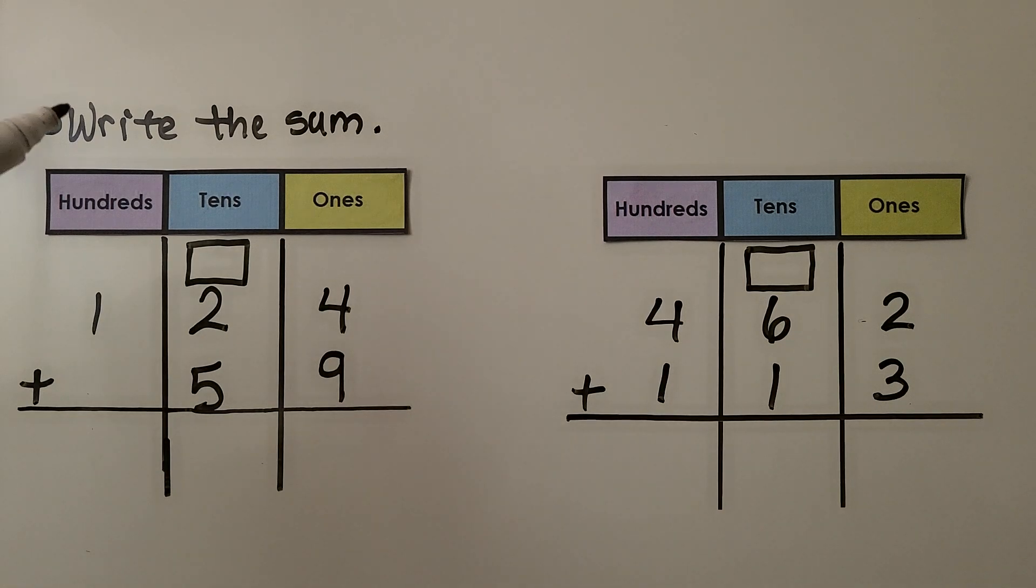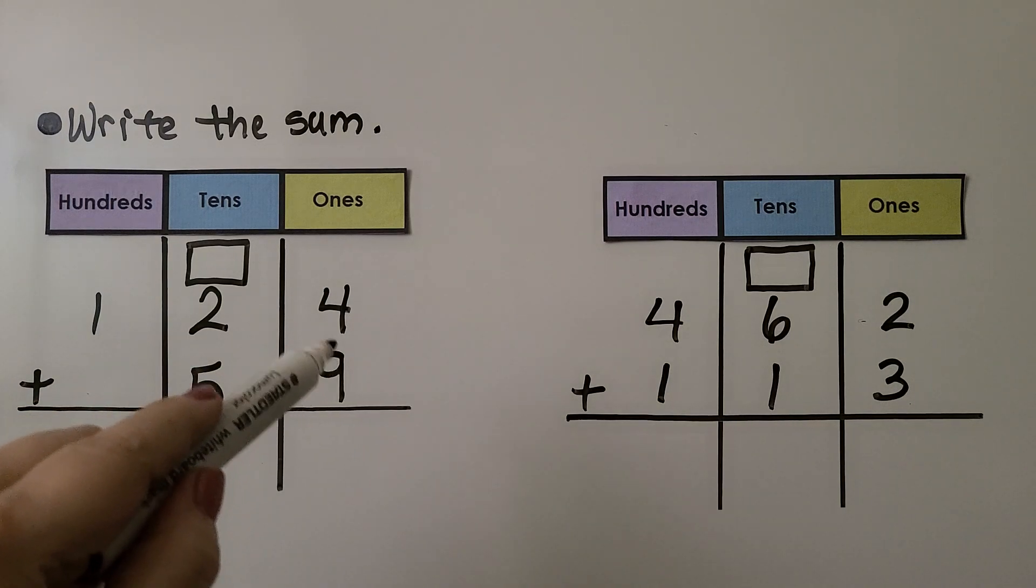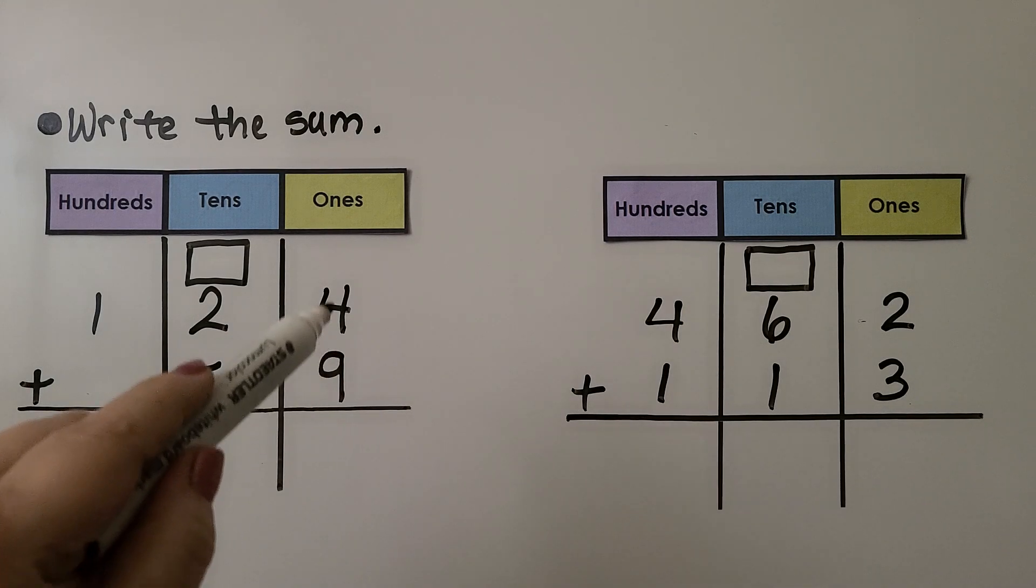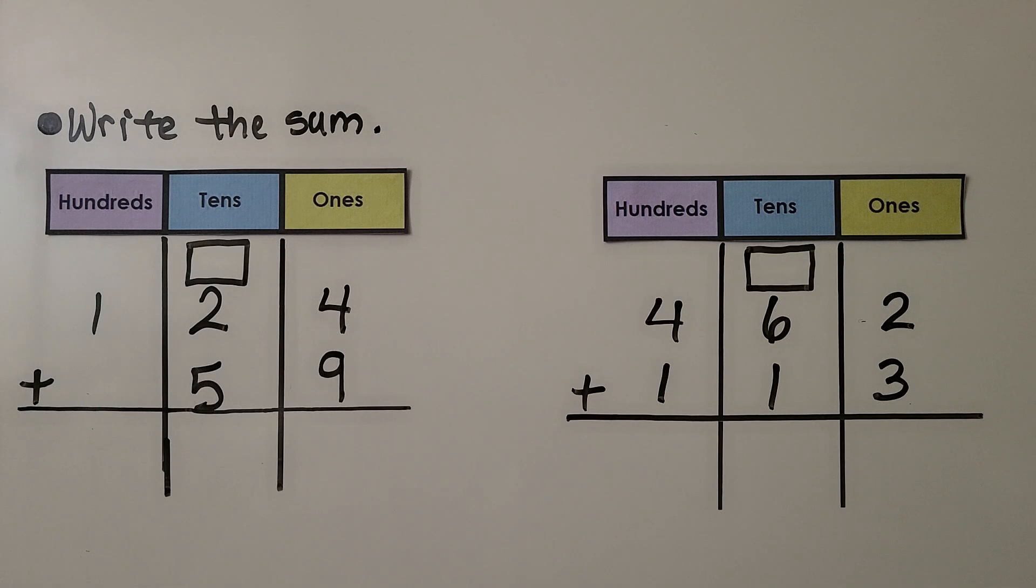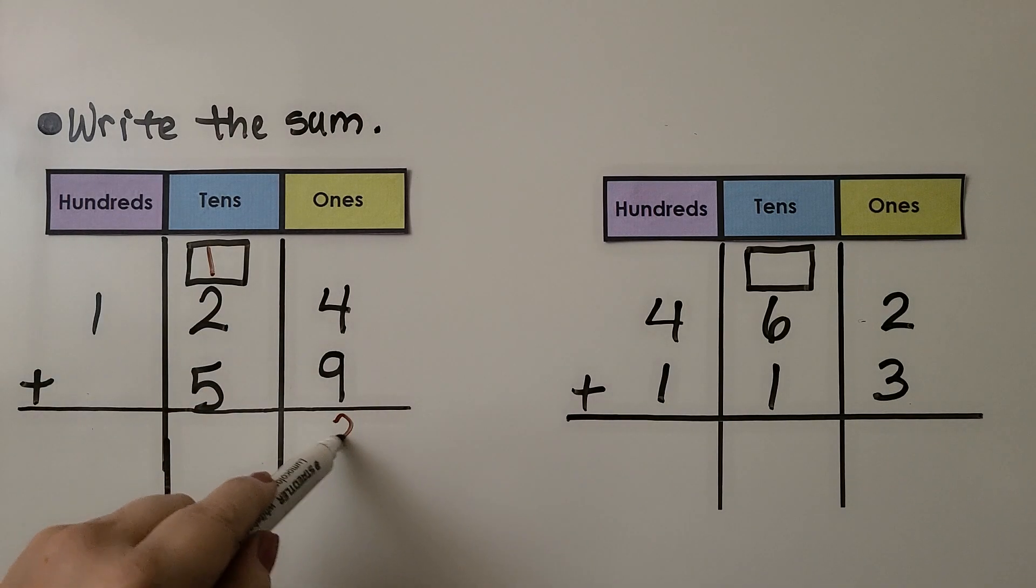It's telling us to write the sum. So we need to do it for each problem. We start with the ones place. We have nine ones plus four ones. It's easier to start with the greater digit. So we start with nine. And we have four. That's thirteen.